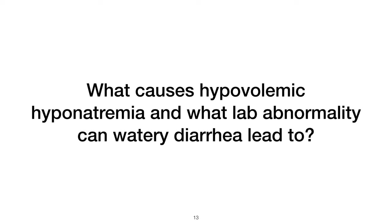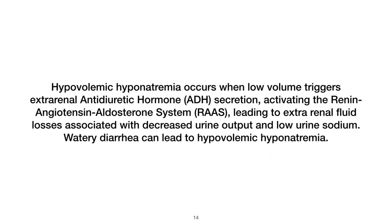What causes hypovolemic hyponatremia, and what lab abnormality can watery diarrhea lead to? Hypovolemic hyponatremia occurs when low volume triggers extrarenal antidiuretic hormone (ADH) secretion, activating the renin-angiotensin-aldosterone system (RAS), leading to extrarenal fluid losses associated with decreased urine output and low urine sodium. Watery diarrhea can lead to hypovolemic hyponatremia.